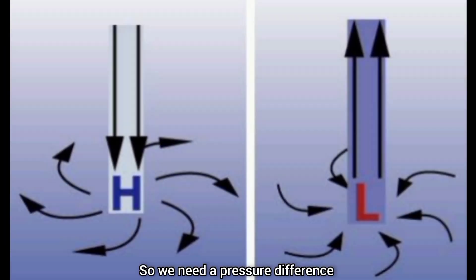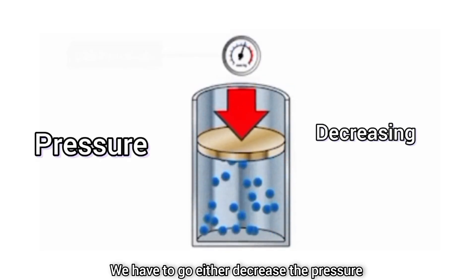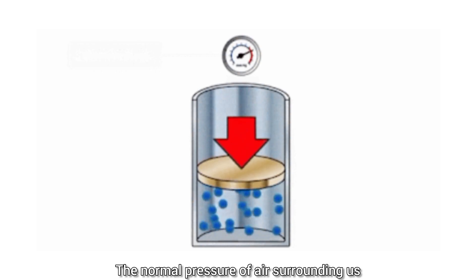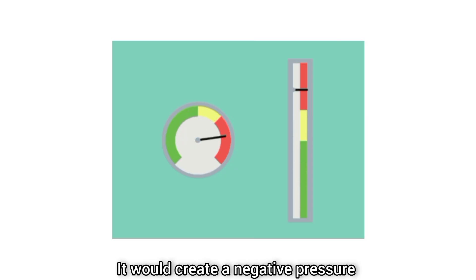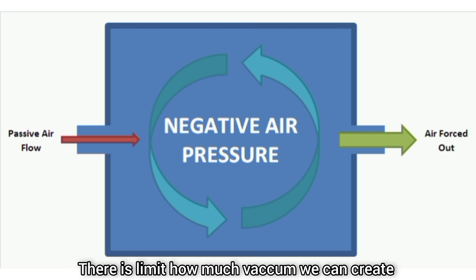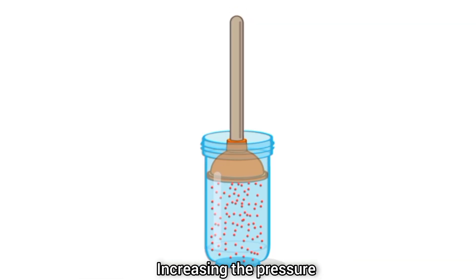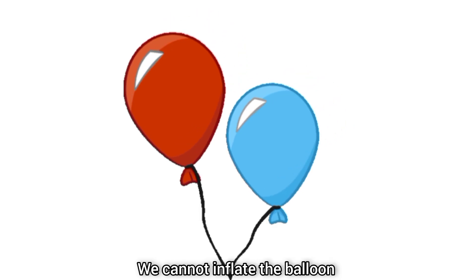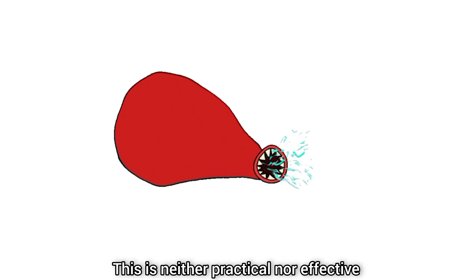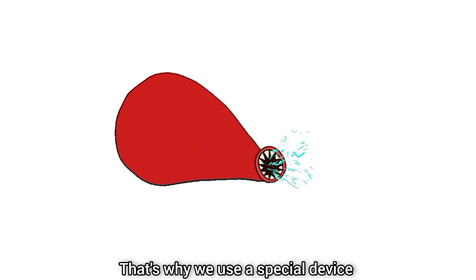So we need a pressure difference to create a cooling effect by this method — we have to either decrease the pressure or increase the pressure. The normal pressure of air surrounding us is 1 bar. If we decrease the pressure, it would create a negative pressure and there is a limit to how much vacuum we can create, but there is no such problem with increasing the pressure. That's why the second option is preferred. But we cannot inflate the balloon again and again — this is neither practical nor effective. That's why we use a special device called a compressor.